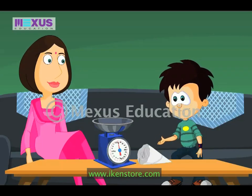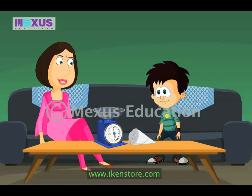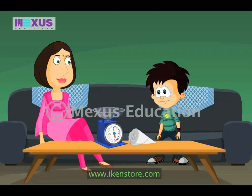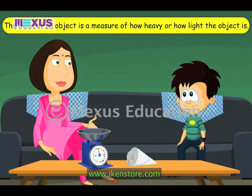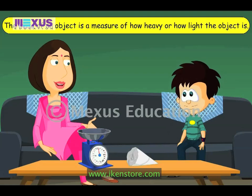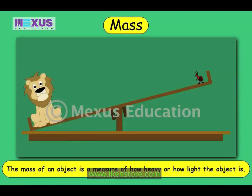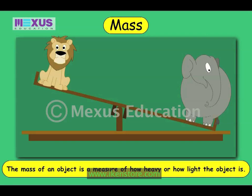How would we do that? By weighing its mass, or what we commonly call weight. Mass? The mass of an object is a measure of how heavy or how light the object is. Objects can be termed light or heavy depending on their mass. For example, a lion is heavier than an ant, and an elephant is heavier than a lion.